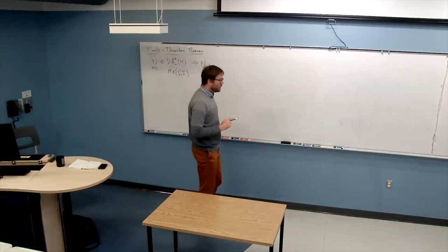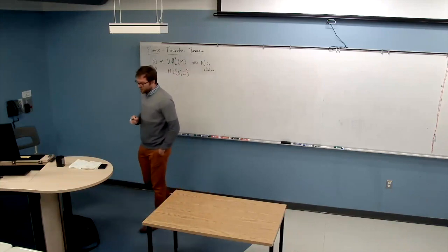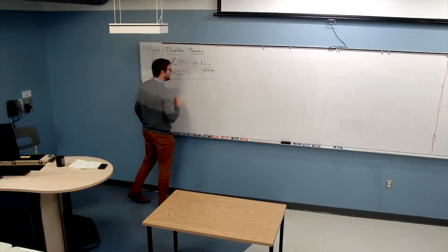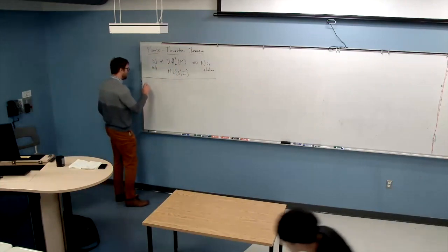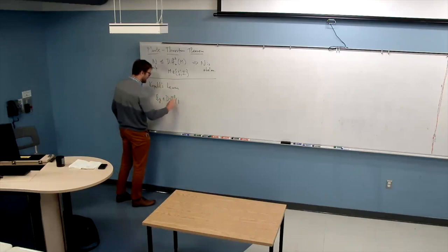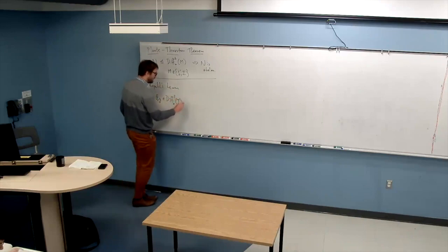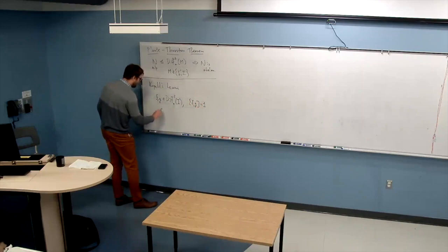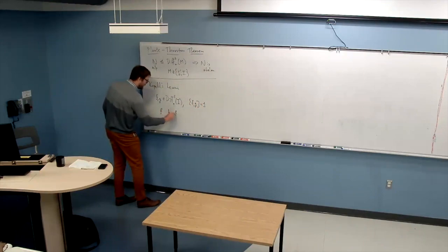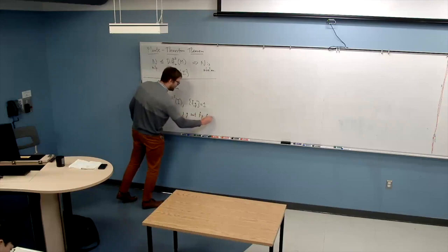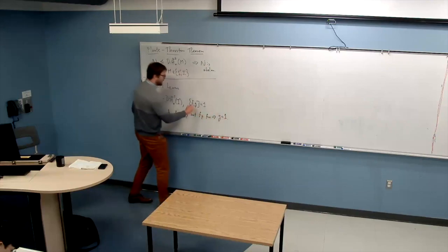I'd like to indicate why this theorem is true in view of Kopell's Lemma, which I gave last time but didn't prove. Kopell's Lemma says that if you have f and g in Diff²(I), with f and g commuting, f fixed-point free, and g not fixed-point free, then g is the identity — fixed-point free in the interior of the interval.